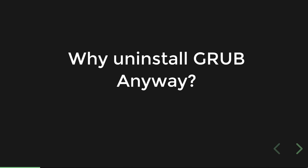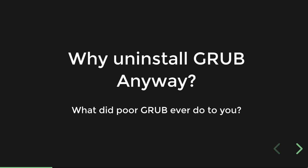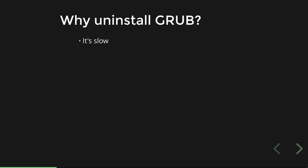So why should we uninstall Grub? It's something that everybody interacts with and it generally does its job. But there are a couple of reasons. First, it's a bit slow — boot times do suffer. It's very old and hasn't really been rewritten since quite a long time ago. It's fairly complicated; if you've looked at the Grub 2 configuration for adding custom entries, it's difficult to say the least. And it's also a little bit ugly. Grub tends to turn itself on — especially with dual boot setups — and doesn't like to turn itself off.